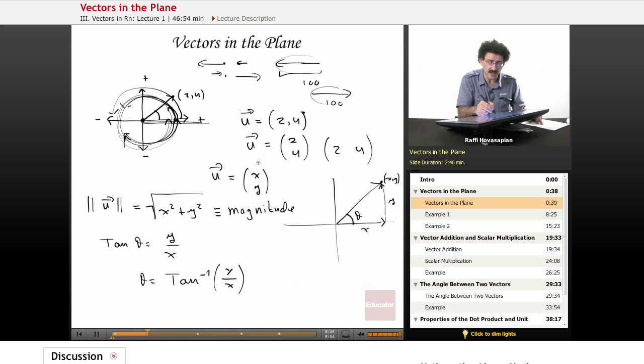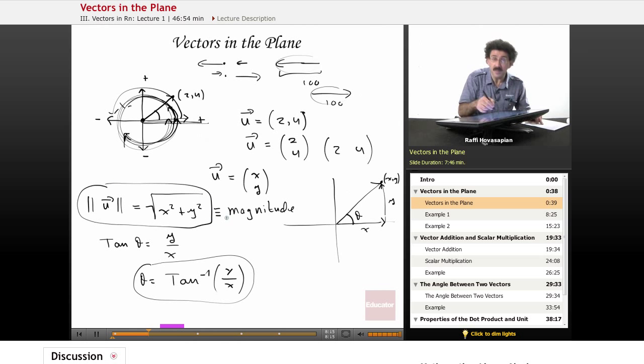y divided by x. So, when you're given a vector in this form, you can find out the length and you can find out the angle that it makes with the positive x axis and remember again, we're measuring that way.